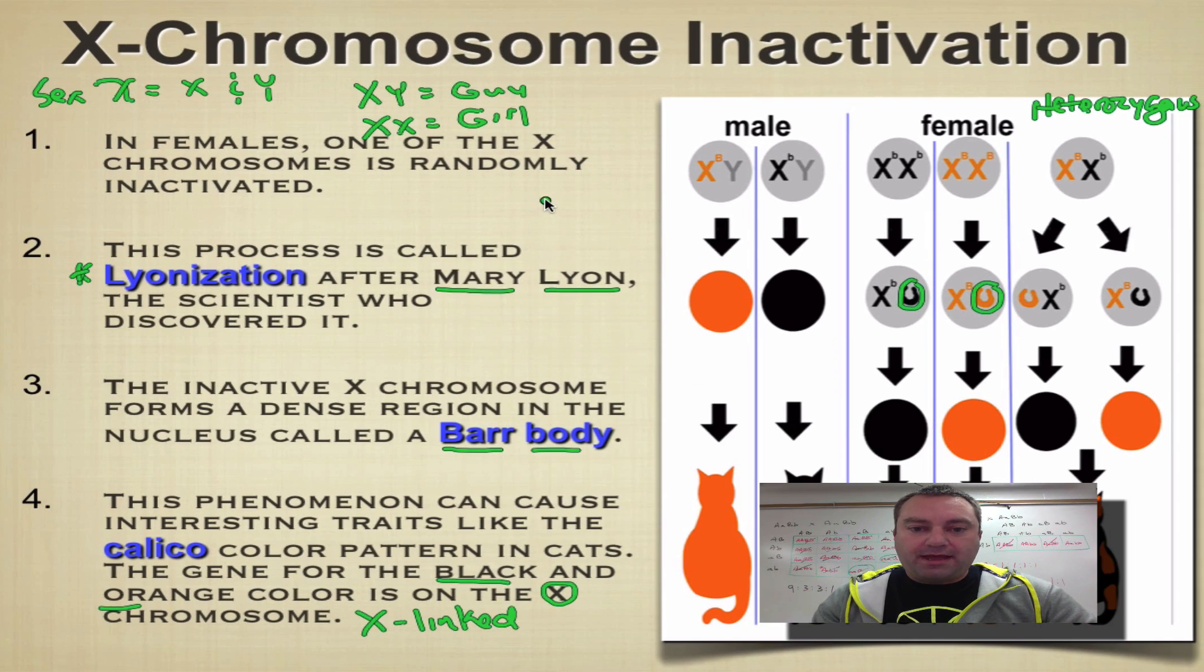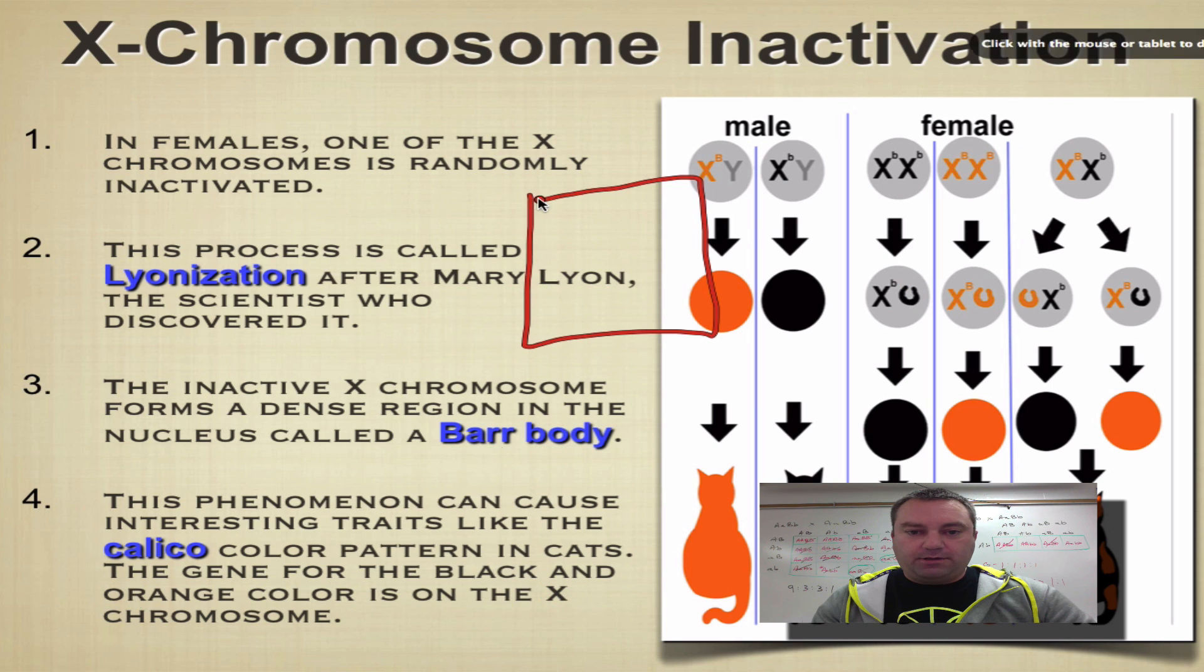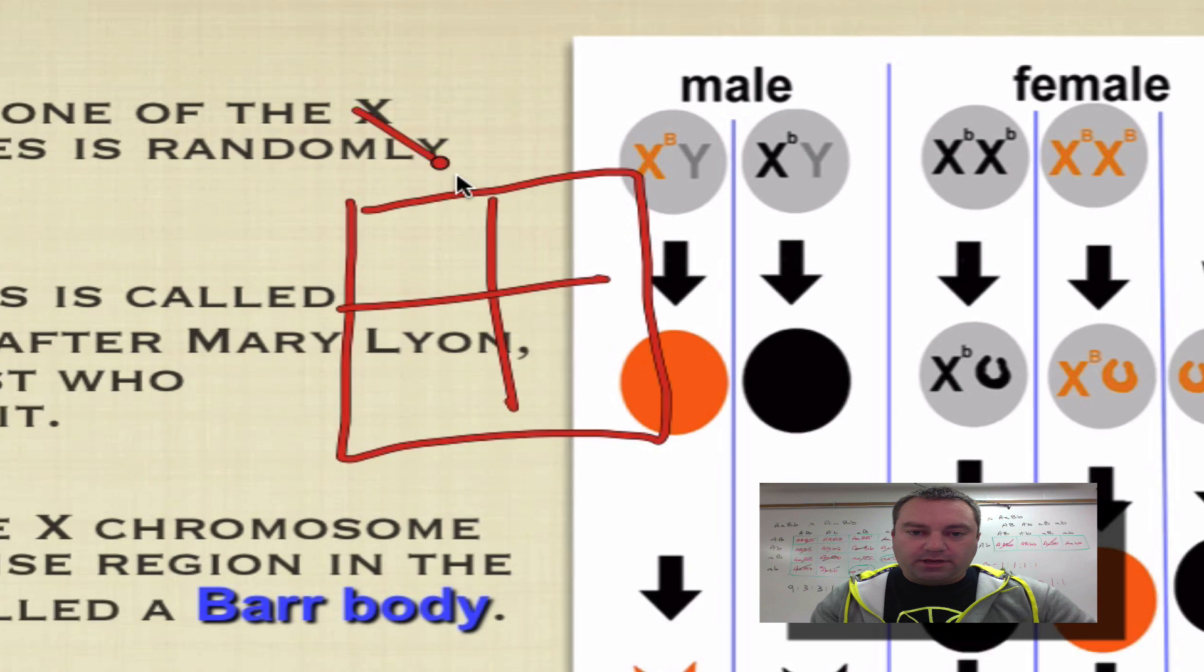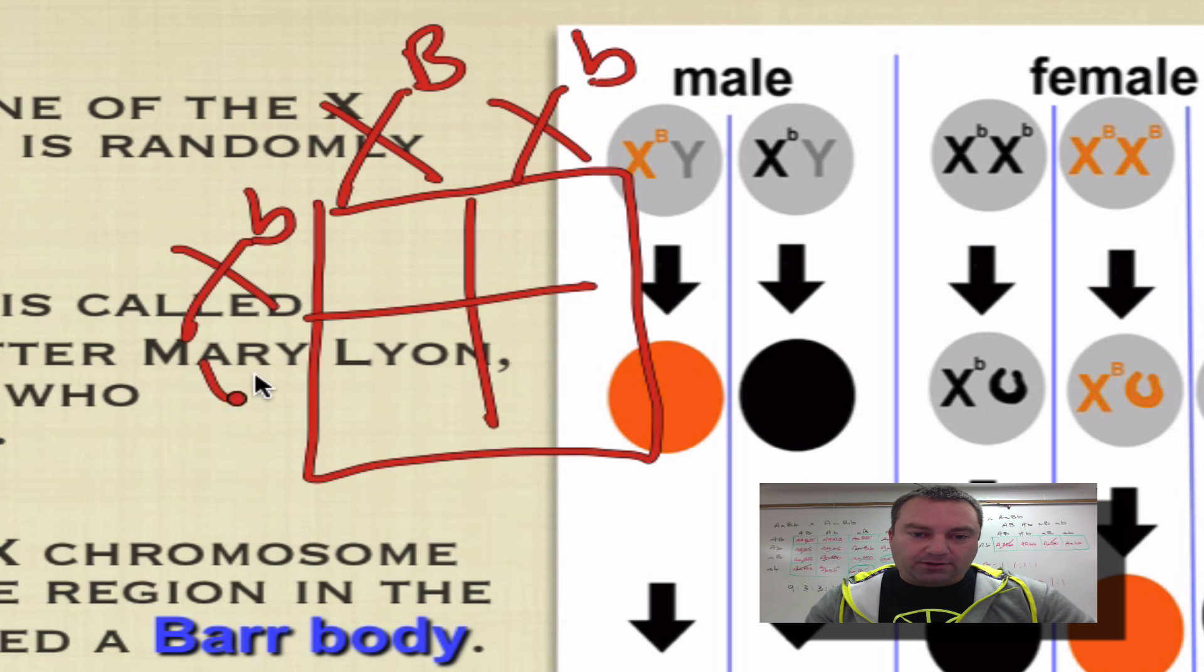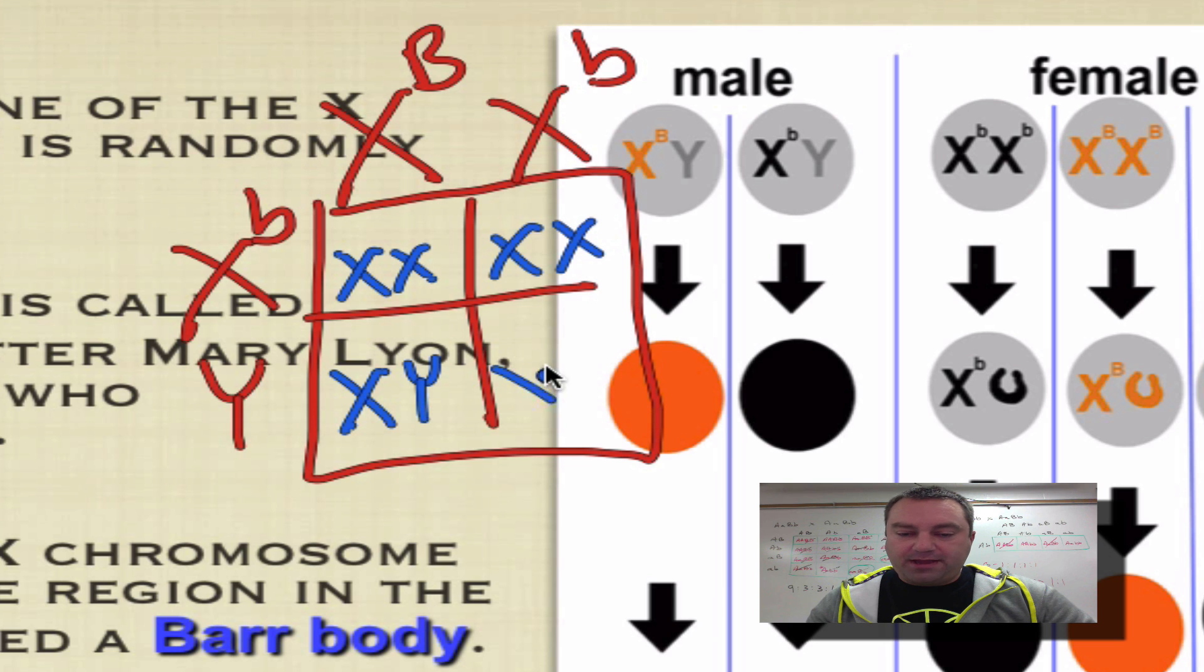I hope you guys can see that. Here we got X with a big B, X with a little b - there's your heterozygous female. Here's your black colored male. Let's pick another color. X, X, X, X, X, Y, X, Y.